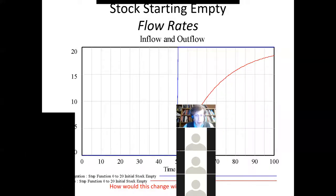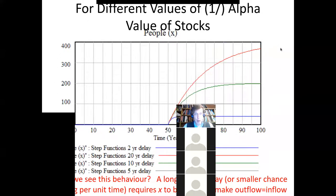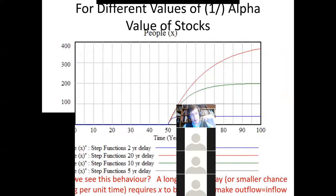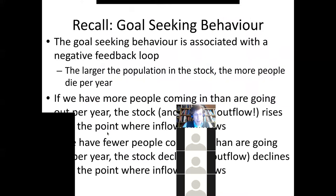So we can think of this first-order delay as something where the outflow is following the inflow. If we line these up on a graph: the inflow shoots up and then the outflow follows it slowly. Depending on the mean time — or the value of alpha, which is one over the mean time — it can follow the inflow more closely or more slowly. The value of the stock will also rise to higher or lower levels to achieve an outflow that equals the inflow.